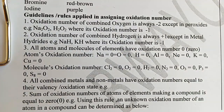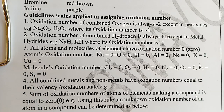Here are the rules or guidelines used in assigning oxidation numbers. Rule number one: the oxidation number of uncombined oxygen is always negative two, except in peroxides — for example, sodium peroxide and hydrogen peroxide — where the oxidation number is negative one.